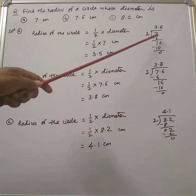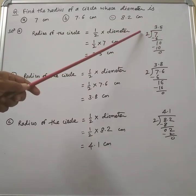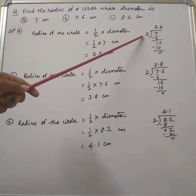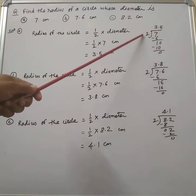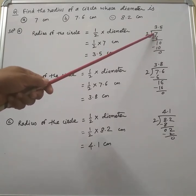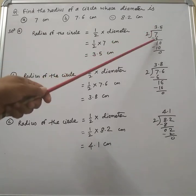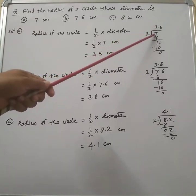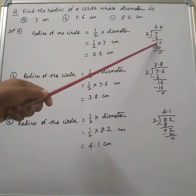In this way, 7 is the dividend and 2 is the divisor. We have to recall the table of 2 close to 7. So 2 times 3 is 6. Then 7 minus 6 is 1. Now 1 is not divisible by 2.